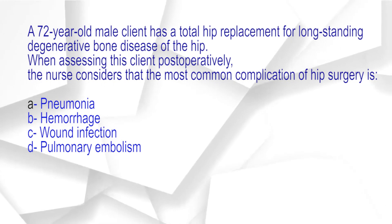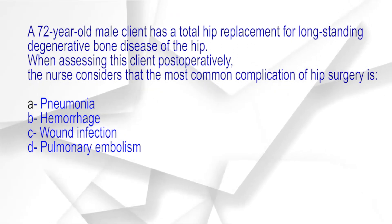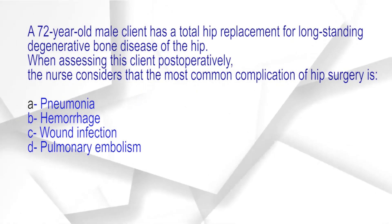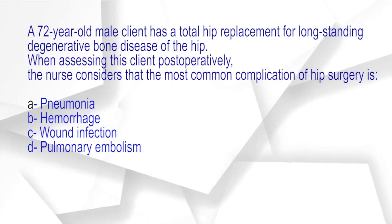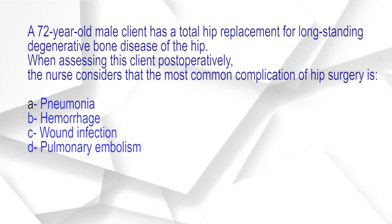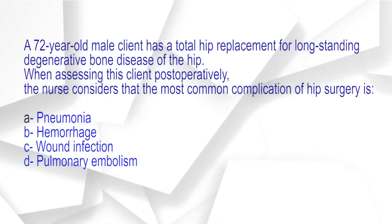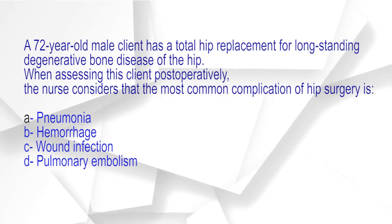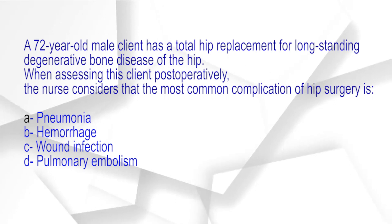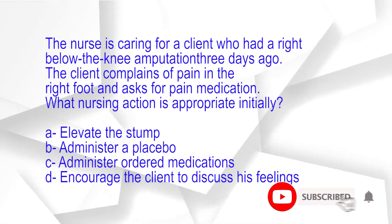A 72-year-old male client has a total hip replacement for long-standing degenerative bone disease of the hip. When assessing this client postoperatively, the nurse considers that the most common complication of hip surgery is: A. Pneumonia. B. Hemorrhage. C. Wound infection. D. Pulmonary embolism. The correct answer is option D: Pulmonary embolism.